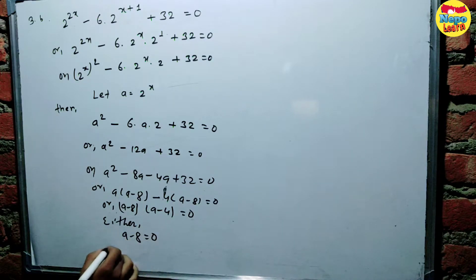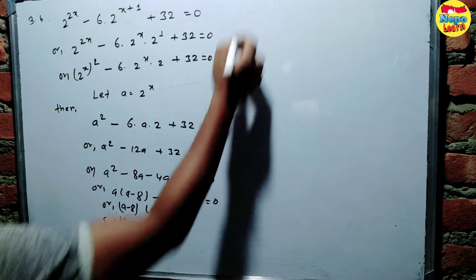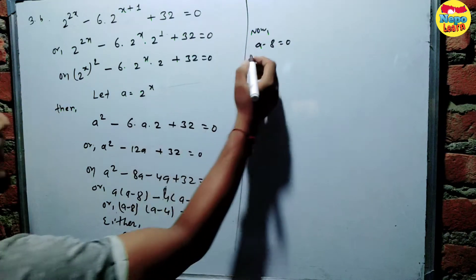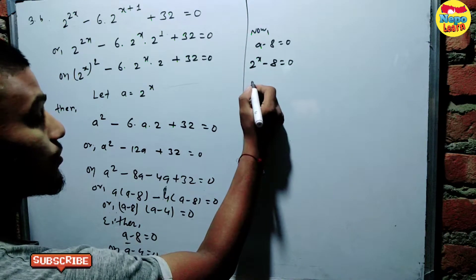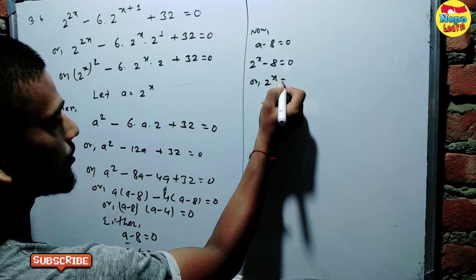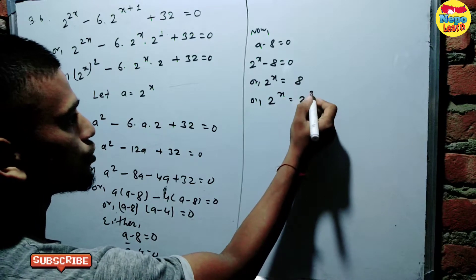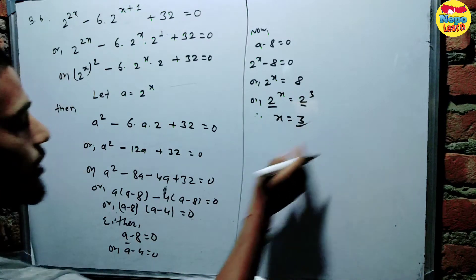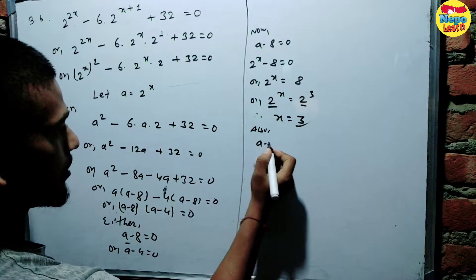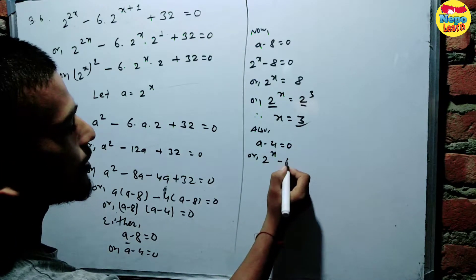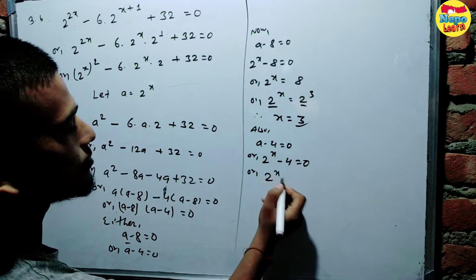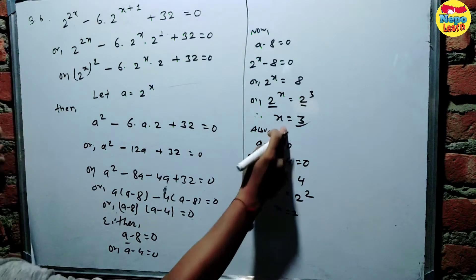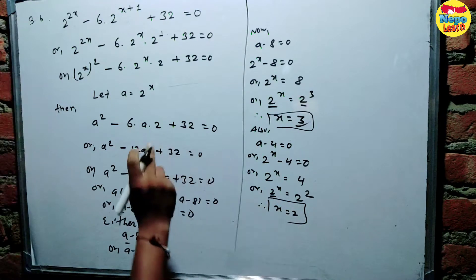So we have a minus 8 equals zero, or a minus 4 equals zero. Taking the first condition: a minus 8 equals zero, meaning 2 power x equals 8. Taking the second condition: a minus 4 equals zero, meaning 2 power x equals 4, which is 2 squared, so x equals 2.